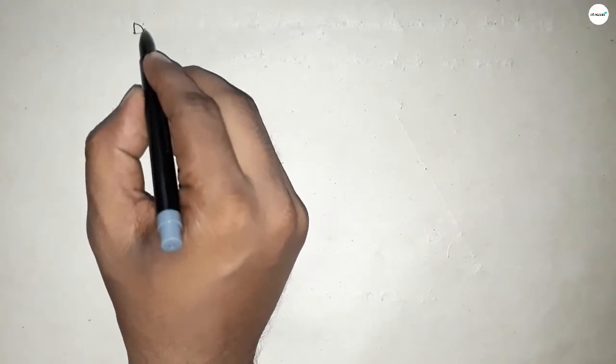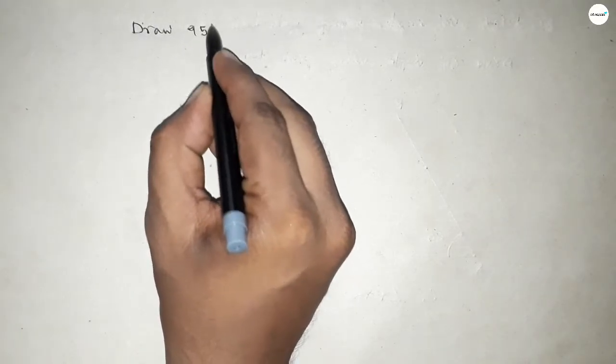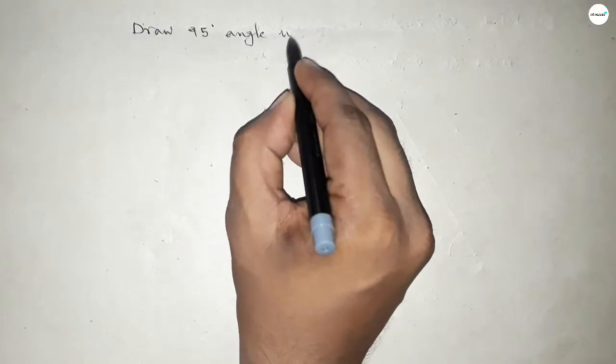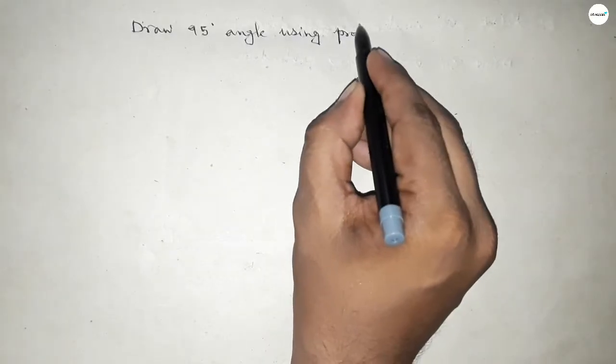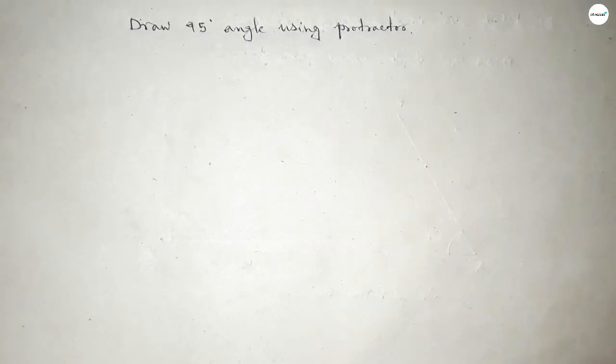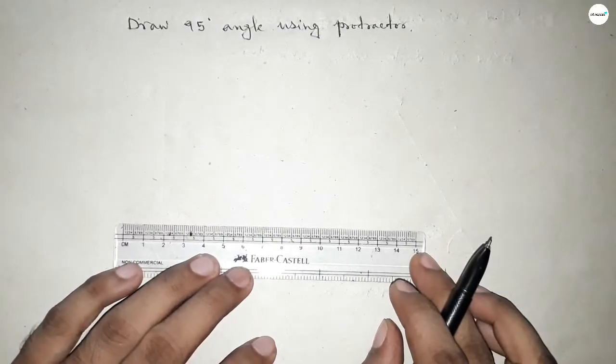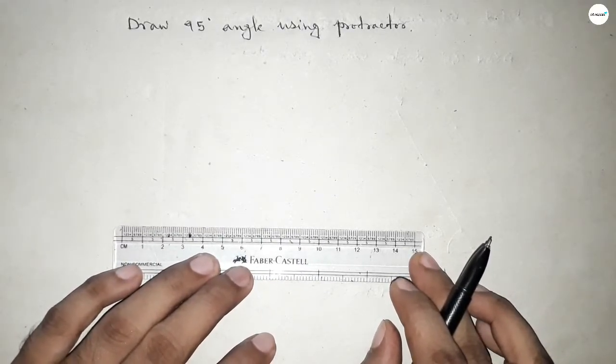Hi everyone, welcome to SSR Classes. Today in this video we have to draw a 95-degree angle by using protractor. Constructing 95-degree angle by using protractor, let's start the video.